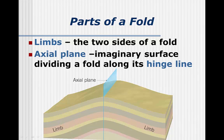A simple fold will have two parts, or limbs, one on either side of the hinge line. An axial plane is an imaginary two-dimensional object that goes through the hinge line and separates the limbs both at the surface and underground. In this example, the axial plane is perfectly vertical, but that only happens in very rare cases where the limbs are perfectly symmetrical.